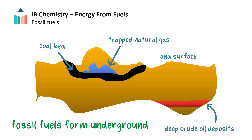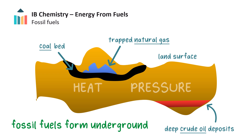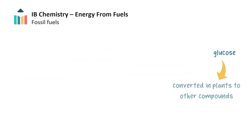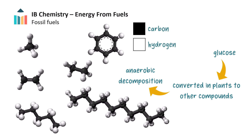Fossil fuels are formed deep underground over long periods from the slow anaerobic decomposition of plants and animals. Intense heat and pressure provide the perfect conditions for this process. The energy that these compounds supply is originally obtained from the sun through photosynthesis in plants, algae, and phytoplankton. The glucose produced is converted to many other compounds in plants, and it is the anaerobic decomposition of these compounds which produces fossil fuel compounds, primarily composed of carbon and hydrogen.